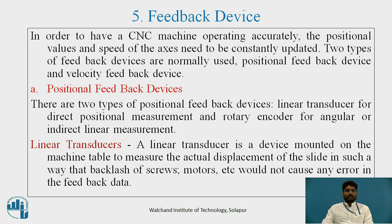Feedback devices are the fifth element. In order to have a CNC machine operating accurately, the positional values and speed of the axis need to be constantly updated. Two types of feedback devices are normally used: positional feedback devices and velocity feedback devices. There are two types of positional feedback devices: a linear transducer for direct positional measurement, and a rotary encoder for angular or indirect linear measurement. A linear transducer is mounted on the machine table to measure the actual displacement of the slides, so that backlash of the screw, motors, etc., does not cause any error in the feedback data.